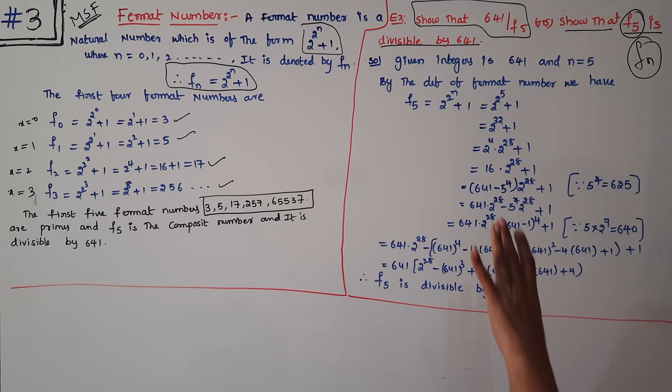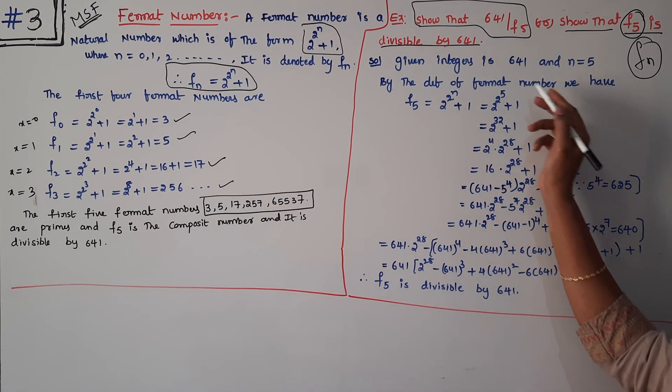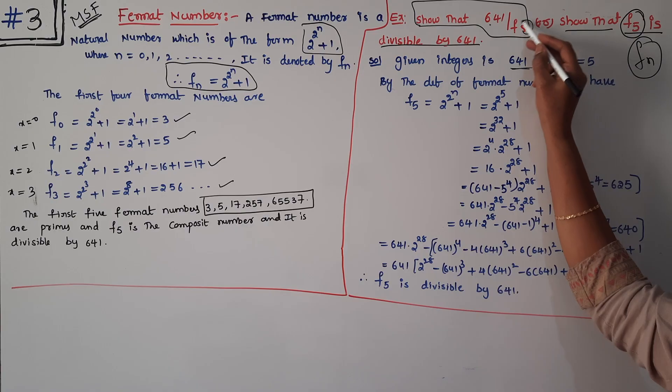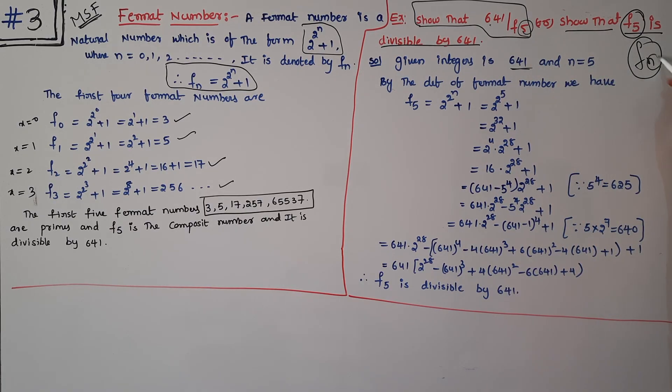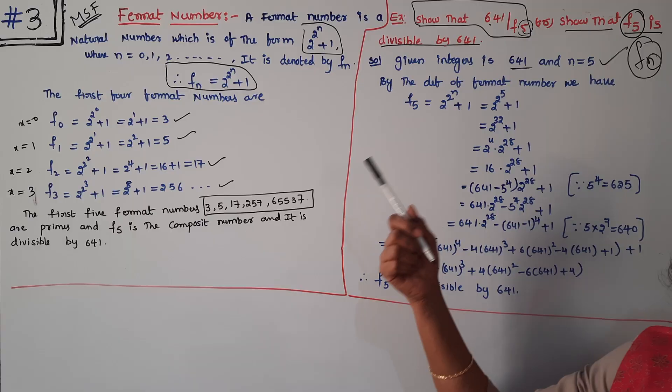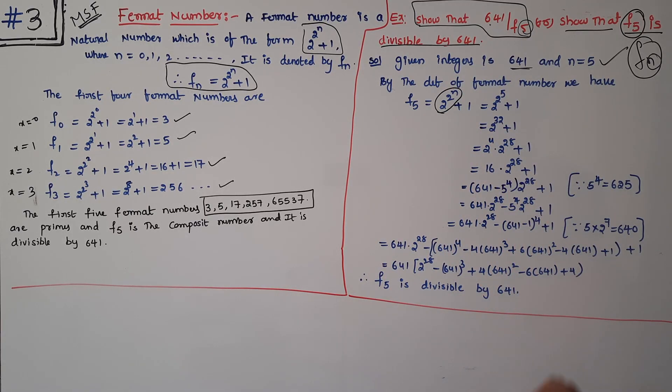That is the Fermat number. This Fermat number and the given integer. First of all, what is the given integer? 641. What is our n value? In the place of F_5, n value is 5. By the way, Fermat number, F_5 = 2^(2^5) + 1. The n value is equal to 5, so substitute it.